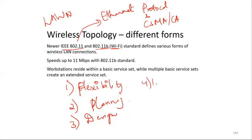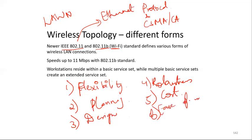The next advantage is robustness — wireless networks can handle disasters such as earthquakes and floods, whereas wired network infrastructure would break down in such events. Then there is cost — the cost of installing and maintaining a wireless LAN is on average lower than installing a wired network. And finally ease of use — wireless LANs are easy to use and users need very little information. Anybody can connect to Wi-Fi and use it easily, unlike older wired networks that required more user education.